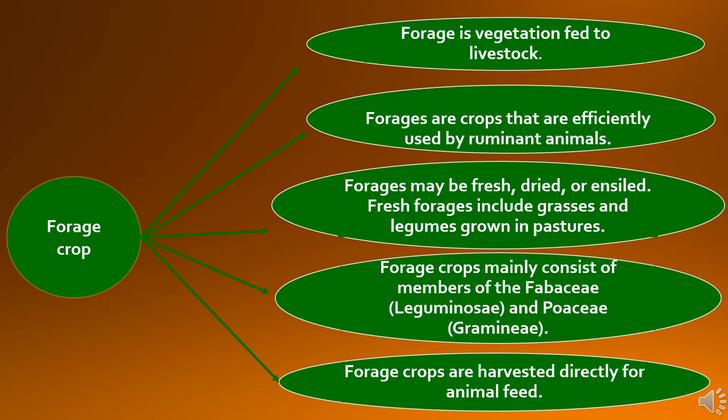Some important points related to forage crops: Forage is vegetation fed to livestock. Forages are crops that are efficiently used by ruminant animals. Forages may be fresh, dried or ensiled. Fresh forages include grasses and legumes grown in pastures. Forage crops mainly consist of members of the Fabaceae, Leguminaceae and Poaceae or Gramineae families. Forage crops are harvested directly for animal feed.